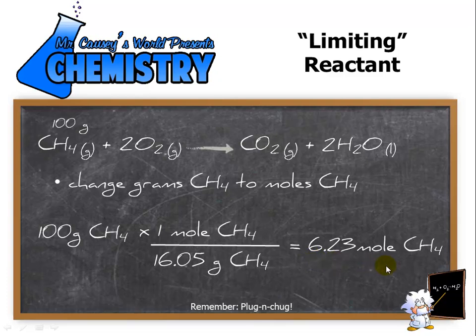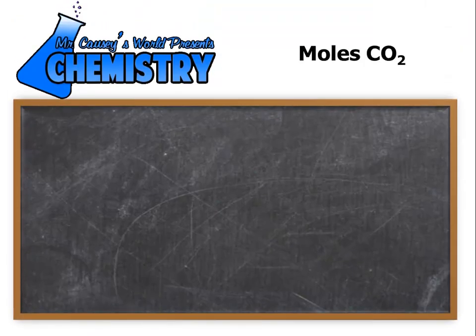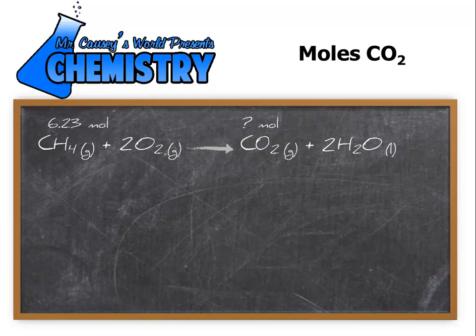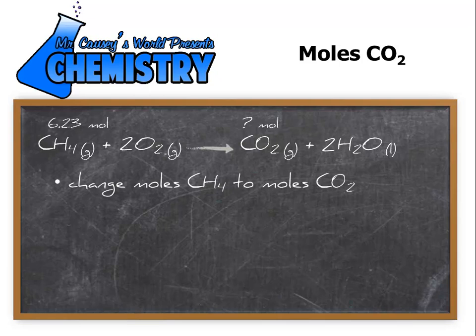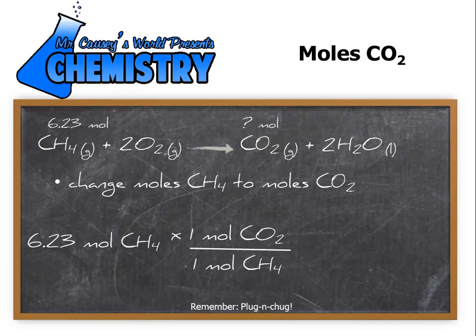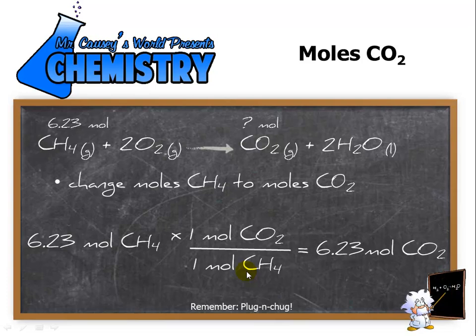Now using the moles of methane, we will be able to convert to moles of carbon dioxide and moles of water. Okay, moles of carbon dioxide. Let's put down the balanced equation again. Change moles of methane to moles of carbon dioxide. We do that by taking moles of methane and multiplying it by the mole to mole ratio, which is really nice because one mole of methane equals one mole of carbon dioxide. So if we have 6.23 moles of methane, we will have 6.23 moles of carbon dioxide.